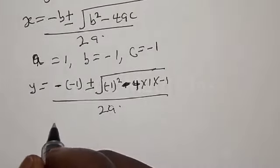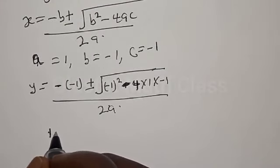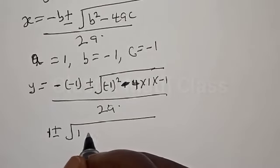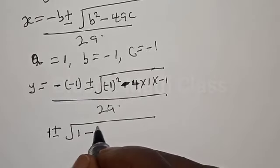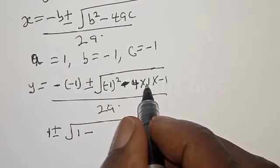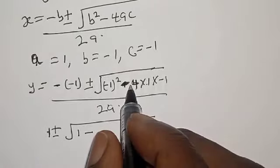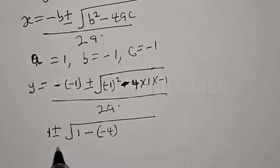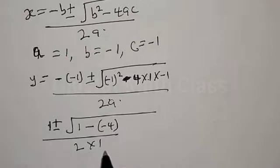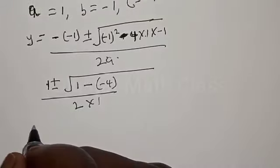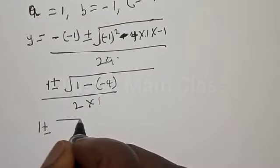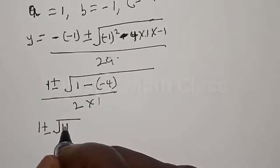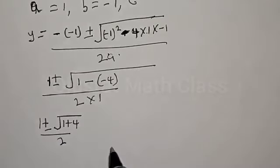Then we have 1 plus or minus square root of 1 minus 4 times 1 times minus 1, that is 1 minus minus 4, over 2 times 1. Then we have 1 plus or minus square root of minus 1 plus 4, over 2.